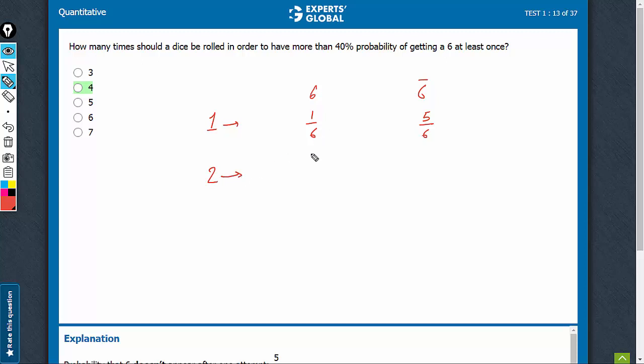In two attempts, this would be many cases, because one case would be that you get it in the first time, not the second time. Second case would be you get it the second time, but not the first time. In third case, you get both times, and all the probabilities would need to be added. That would take a lot of time.